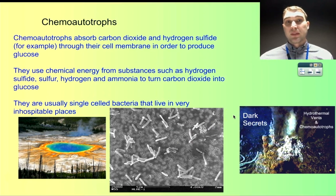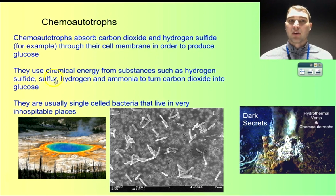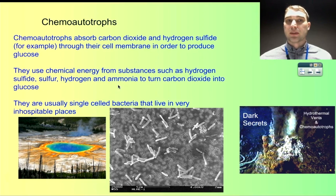Chemo-autotrophs use carbon dioxide and chemicals like hydrogen sulfide to make their large organic compounds. They use chemical energy from things like hydrogen sulfide, but they can also use elemental sulfur, hydrogen, and ammonia — all fairly reactive substances. They use those chemical reactions to derive enough energy to join carbon dioxide together in particular ways to make glucose, and they also need some hydrogens in there as well.